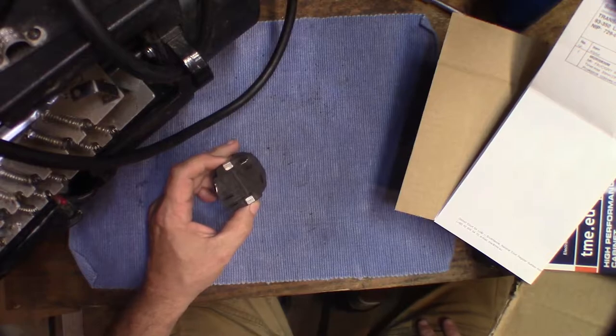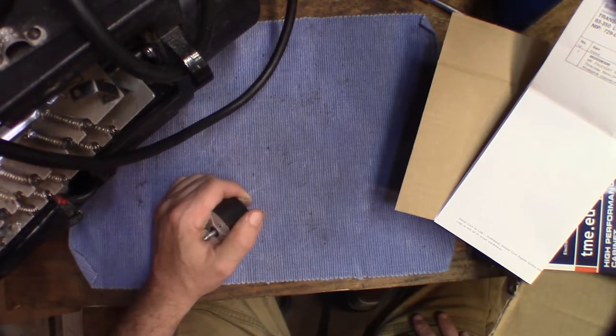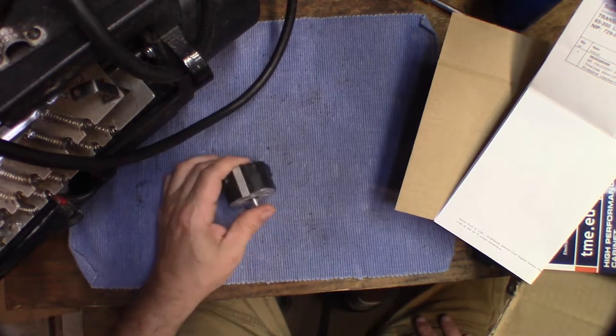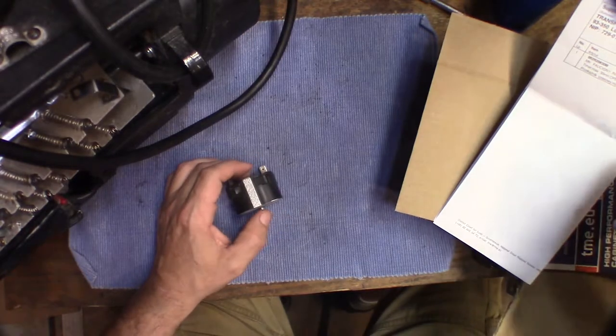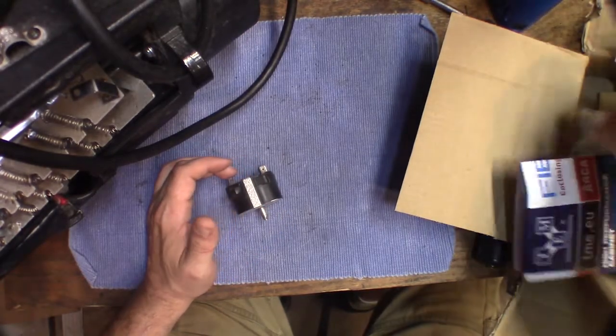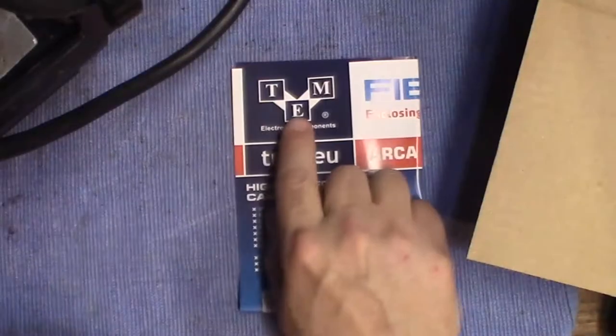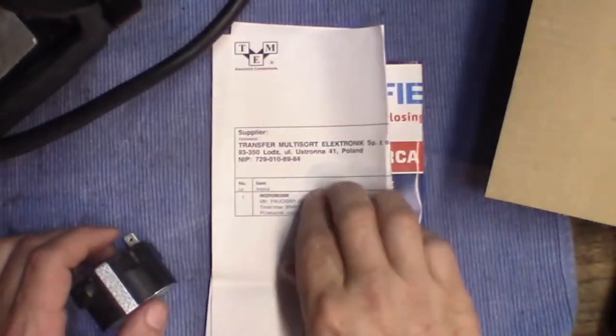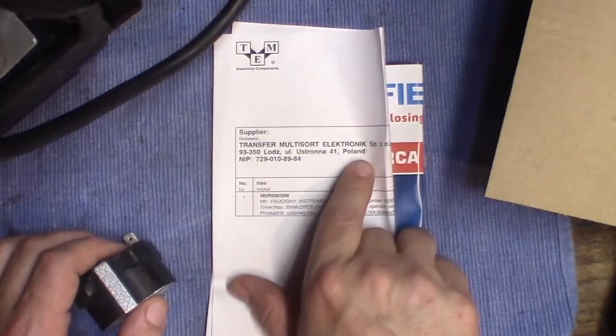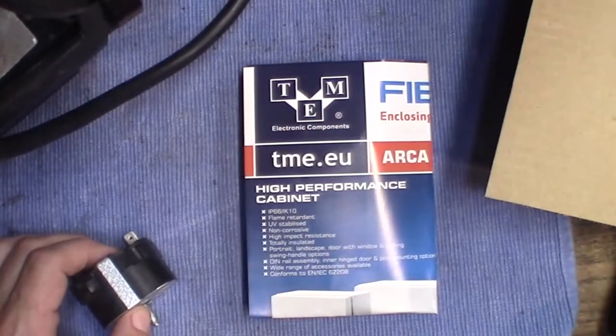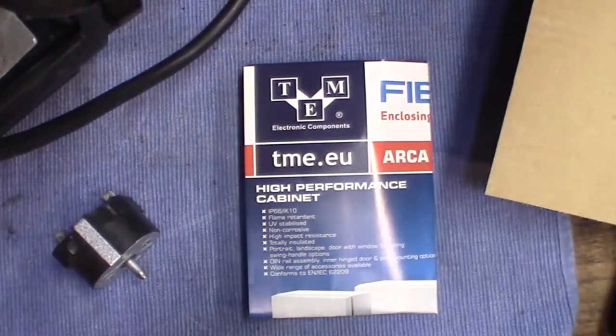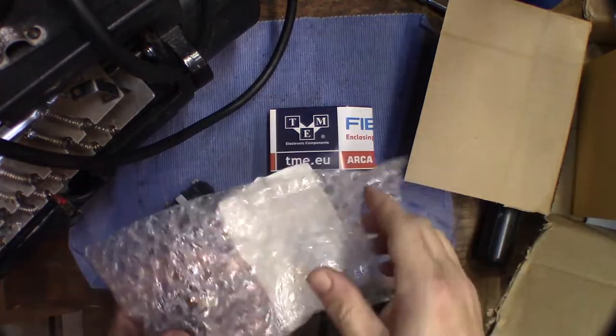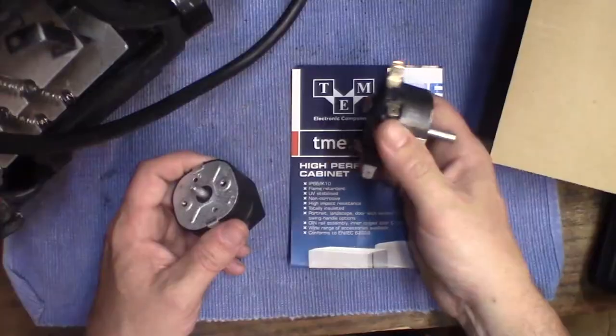Okay so it's a couple days later and right on time of course my neighbors have decided to run their weed eater and their chainsaw at the same time. So I might have to shut the door here in a minute but we have a replacement part and I have to give a big shout out to these guys. TME or Transfer Multisort Electronic out of Poland. They were the only place that had the same brand and the same time setting. These come in a bunch of different time settings. This one was 30 minutes.